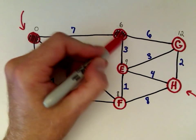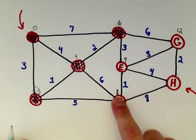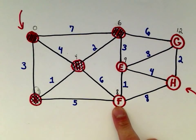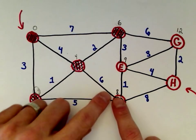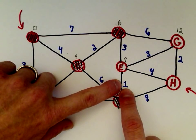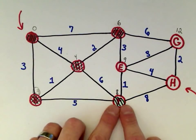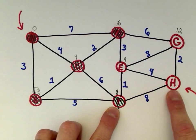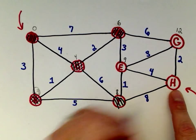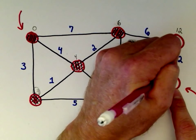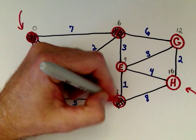We've now taken care of vertex D. Looking at the remaining vertices, we've got eight, nine, and twelve. So let's travel to vertex F. From vertex F to E: eight plus one is nine, which ties the existing value, so E stays at nine. From vertex F to vertex H: we had a path length of eight, plus eight more, gives us sixteen. So I label vertex H with sixteen. We're done with vertex F.